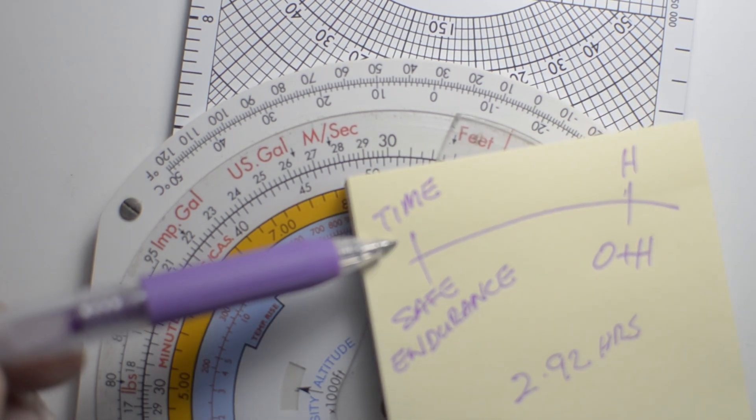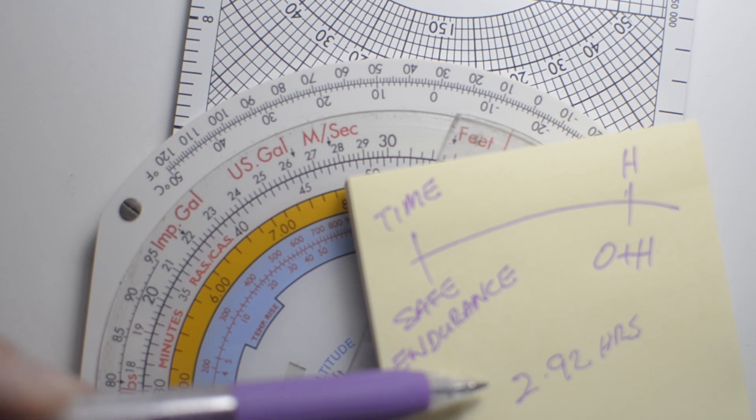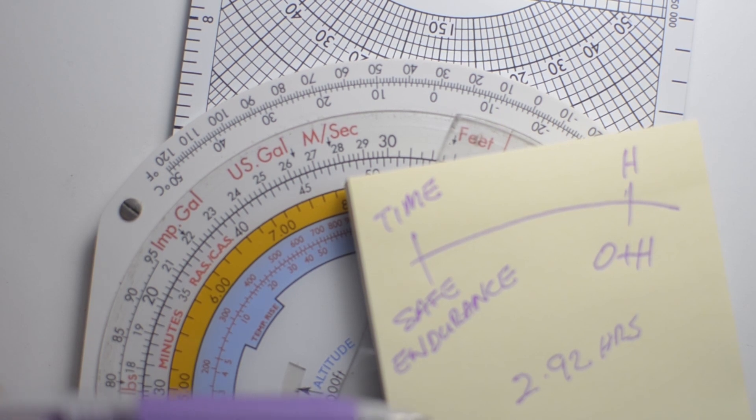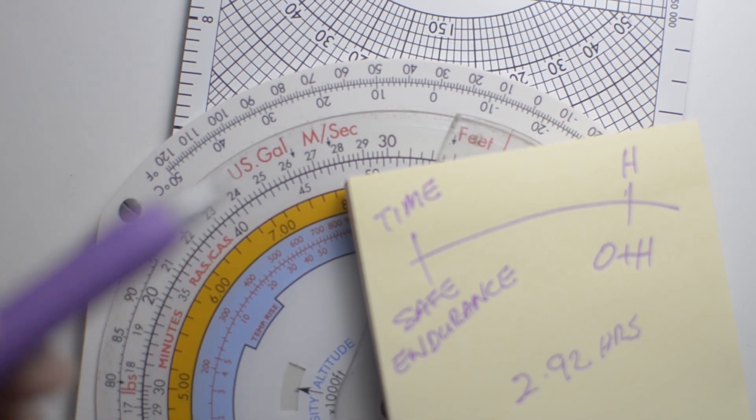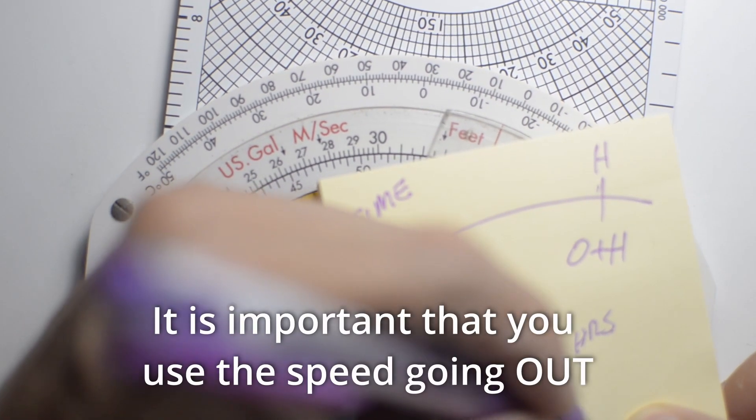The time that it takes to fly to our point of safe return is 2.92 hours, and that would be 2.92 hours flying from departure aerodrome. And when we leave our departure aerodrome at a speed of 300 knots and a headwind component of 50 knots, we're actually leaving at a ground speed of 250 knots.